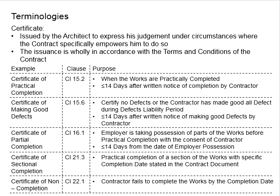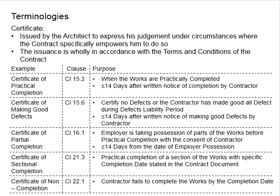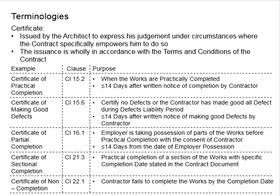However, if the employer wishes to possess part of the work, the employer will have to wait for the certificate of partial completion, and that particular completed part of the work will be handed over to the employer. From then, the defect liability period starts for that particular section. This certificate of partial completion will need to be issued by the architect within 14 days of the date of the employer's possession. Theoretically, without the certificate of completion, the employer cannot occupy the building.